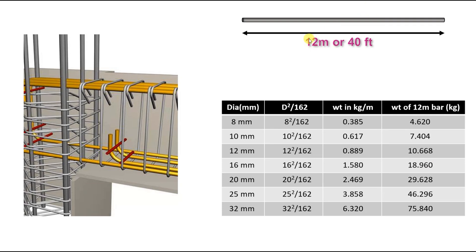Whatever the length, for example if you take one column — in the column there will be longitudinal bars and also ties. All the lengths you have to calculate, and according to the diameter you have to separate them. Then finally you can take the overall length of the bar and multiply it with the corresponding kg-per-meter values. If you have a 12 mm bar, multiply the total length with its value and you get the weight in kgs. Finally, compile all bars of the same diameter, add up those values together, and use that final value for material procurement or quantity calculation.